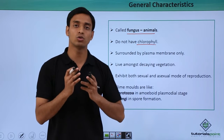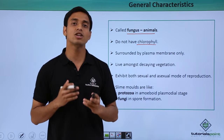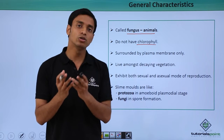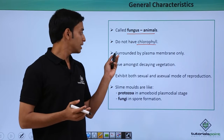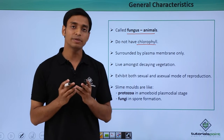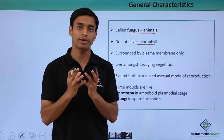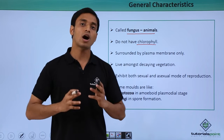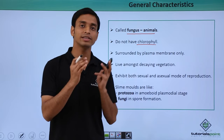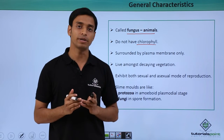Since slime molds do not have chlorophyll, they cannot make their own food. They are also surrounded by a plasma membrane only, meaning they do not have an outer cell wall covering. The outermost layer covering these slime molds is the plasma membrane, which represents their outermost covering.